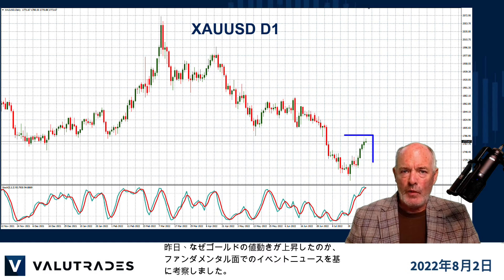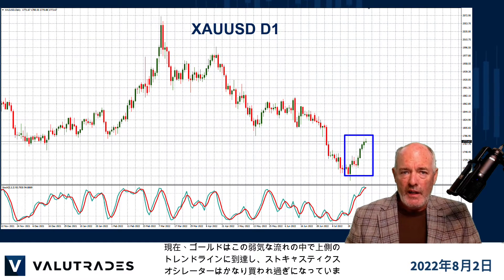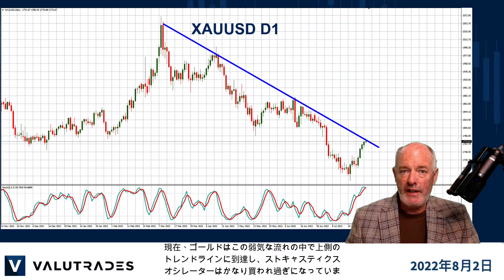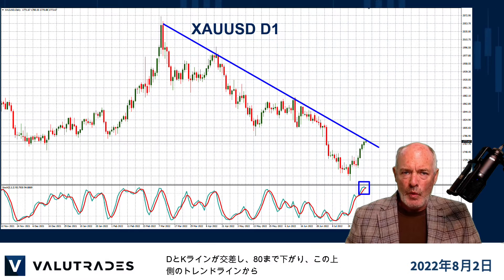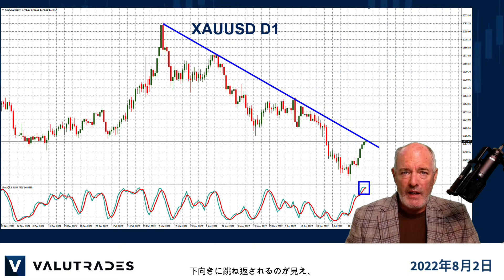Yesterday we looked at why price action on gold had risen based on fundamental news events. Now gold has reached the upper trend line in this bearish run and the stochastic oscillator is quite overbought. Once we see the D and K lines cross and fall below 80,